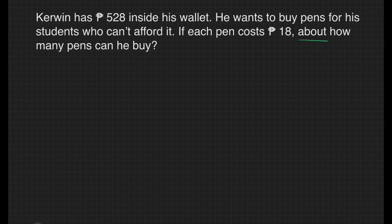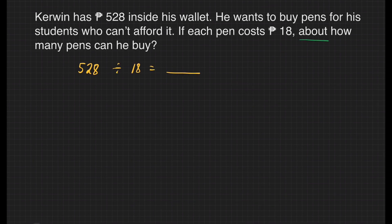First, we need to write our division sentence, and that's going to be 528 divided by 18 equals blank. 528 here is our dividend and 18 is our divisor.